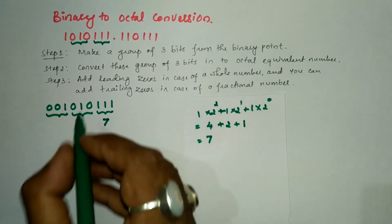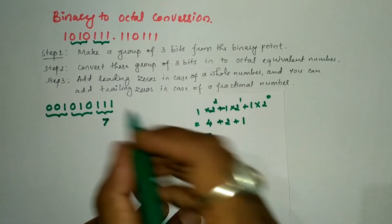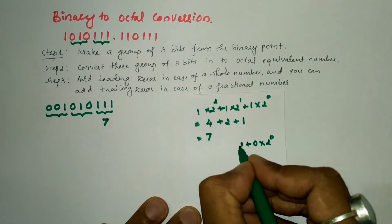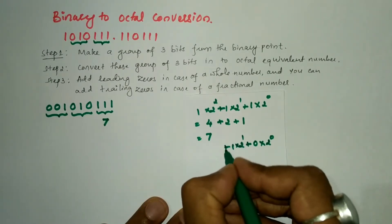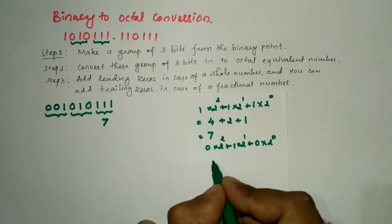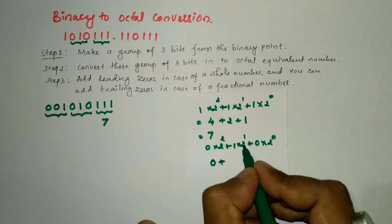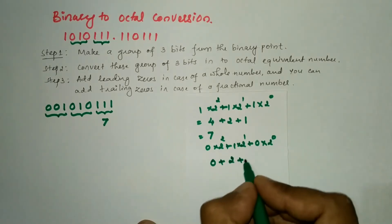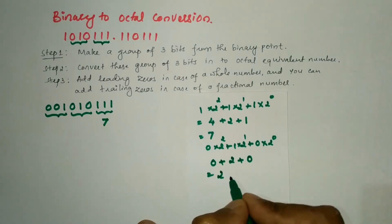Similarly, for the group 0, 1, 0: the positional weight of the rightmost 0 is 2 to the power 0 into 0, plus 2 to the power 1 into 1, plus 2 to the power 2 into 0. That gives us 0 + 2 + 0 = 2. So 0, 1, 0 represents 2.